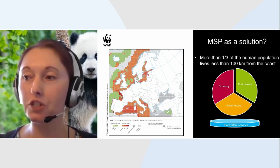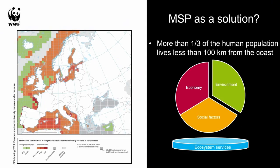More than a third of the world's human population lives less than 100 kilometers from the coast — around 2.5 billion people — which translates into large pressure on the marine environment in coastal areas. Looking at Europe's seas, an overwhelming proportion of our coastal areas are in moderate to bad condition. Marine spatial planning is often seen as a solution for this poor management of marine areas and should deliver on three pieces: social factors, economy, and environment. However, the environment is often the one that is compromised when these three factors are balanced against each other. It's important to remember that ecosystem services form the base that holds all three together.